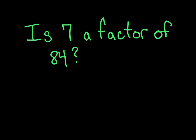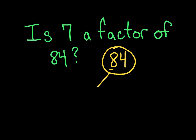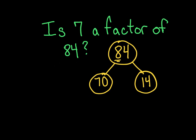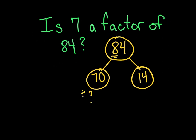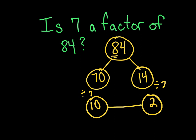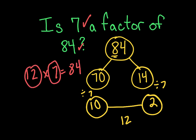Is 7 a factor of 84? Let's put 84 in our number bond. We want to get 7 into it — the closest we can get to 80 is 70. What's left over: 84 minus 70 is 14. Dividing 70 by 7 gives 10, and dividing 14 by 7 gives 2. So 12 is the answer. Yes, 7 is a factor of 84. Also, 12 times 7 equals 84, so 12 and 7 are both factors of 84.